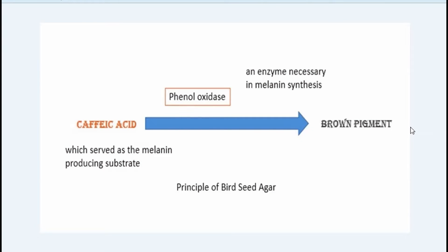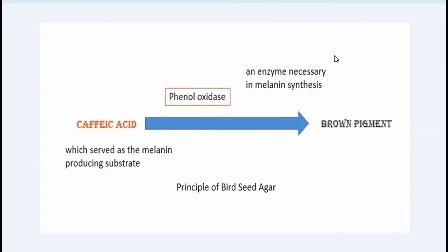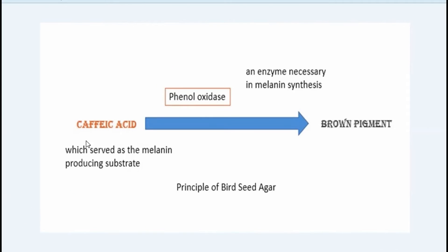Here we can see the flowchart of the principle of Bird Seed Agar. Phenol oxidase, an enzyme necessary in melanin synthesis, is produced by Cryptococcus neoformans. It acts on caffeic acid, which serves as the melanin-producing substrate present in niger seed.